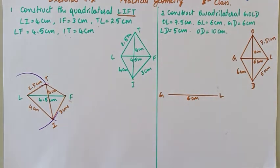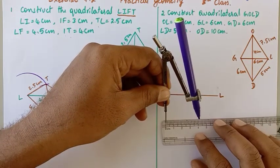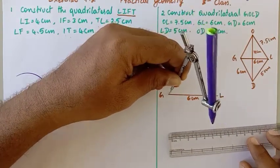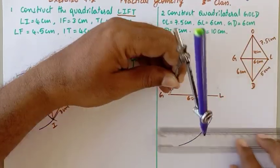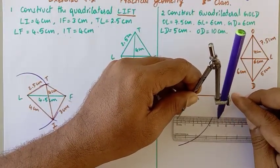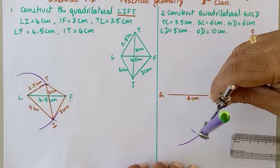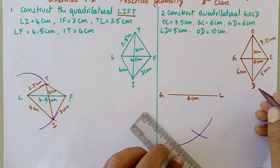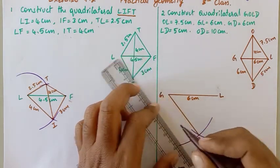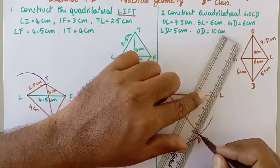I will adjust my compass to 6 cm — GD is 6 cm. I will cut an arc from G. Then DL is 5 cm, so I adjust the compass to 5 cm and cut an arc from L. The intersection gives point D. I will join GD which measures 6 cm and DL which measures 5 cm.